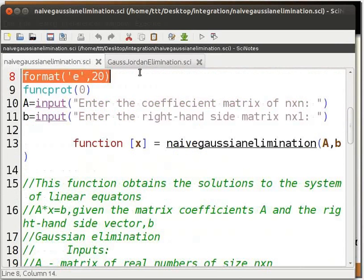The first line of the code is format e comma 20. This defines how many digits should be displayed in the answer. The letter e within single quotes denotes that the answer should be displayed in scientific notation. The number 20 is the number of digits that should be displayed.